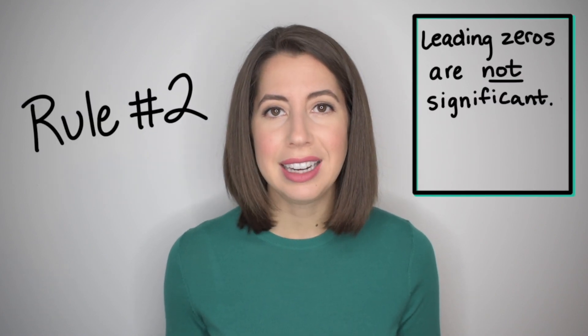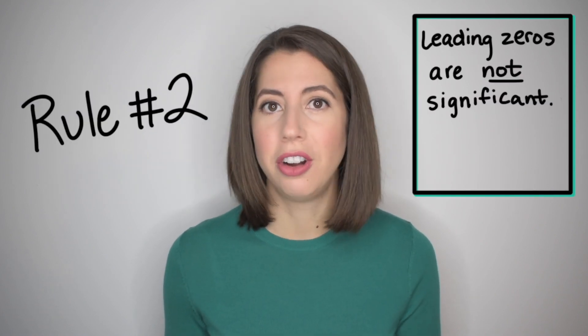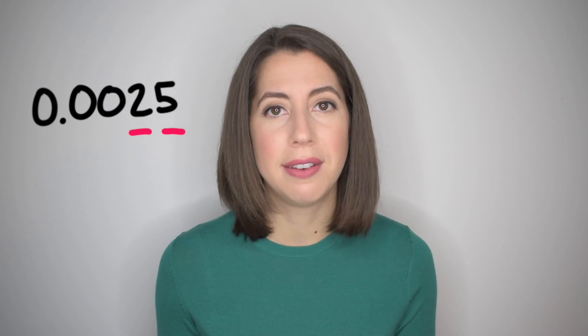Rule number two: leading zeros are not significant. For example, the number 0.0025 has three leading zeros. Those do not count as significant figures. Only the two and the five count because they are non-zero digits.